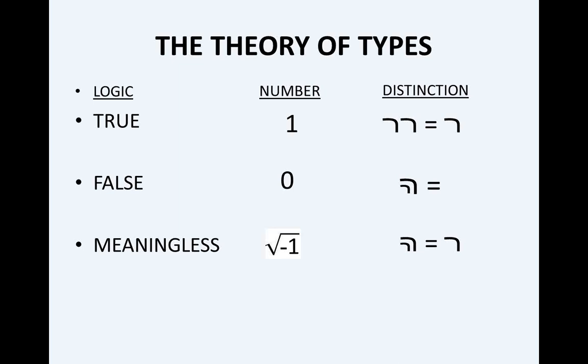The square root of minus one is considered the meaningless statement or analogous to the meaningless statement in Russell's logic and theory of types. In regular mathematics, it is called imaginary because it can't be plotted in two dimensions or three dimensions. Now it's rather unfortunate that historically it was designated as imaginary because the calculus of distinctions reveals that the third type is self-referential.